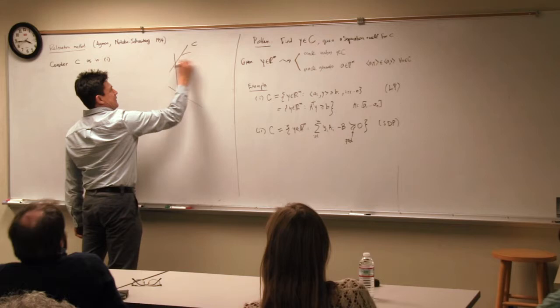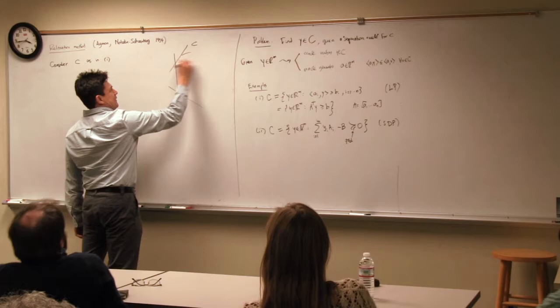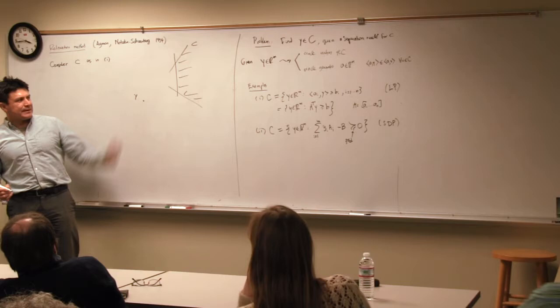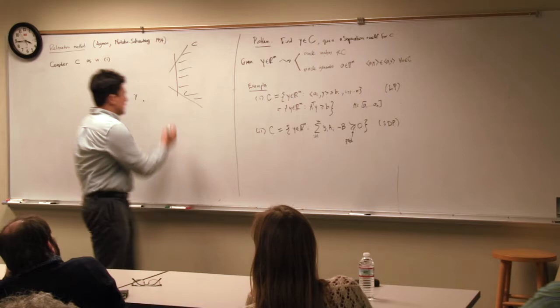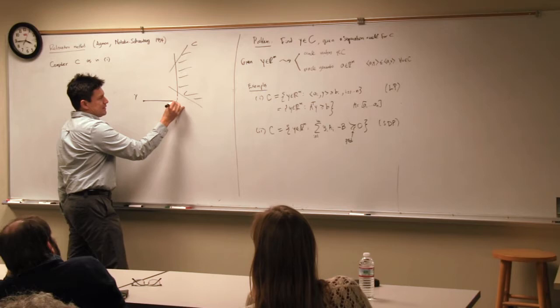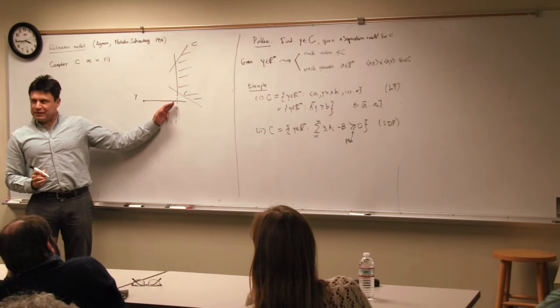If Y is not in C, we find one of the violated inequalities and move toward it. This is a tempting move: go to the point where the inequality is just satisfied, or a little past that.